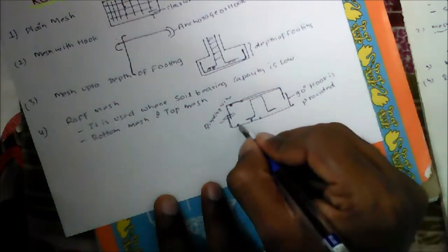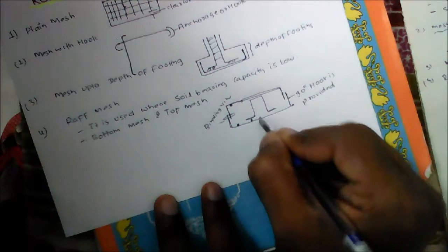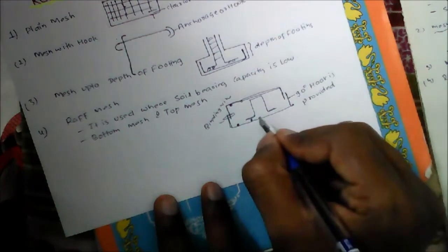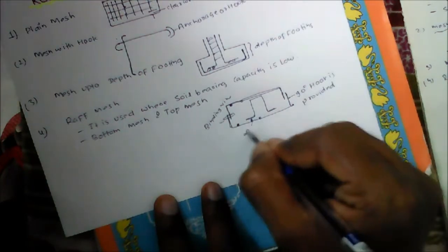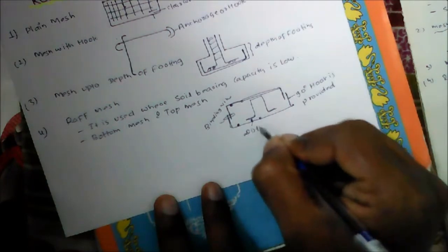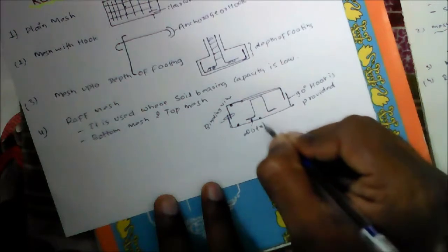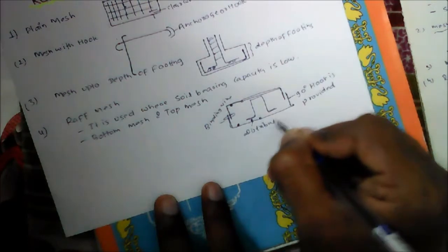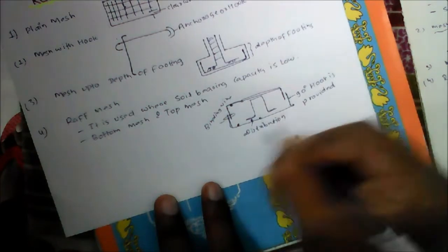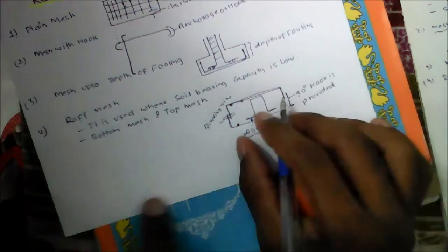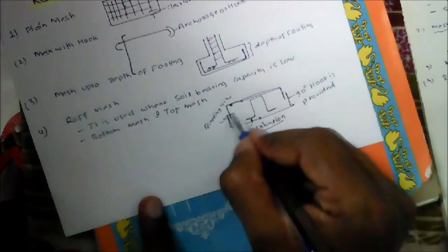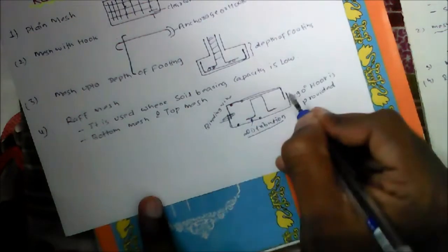The y direction bar is also called the distribution bar, and binding wire will be used to tie the reinforcement.